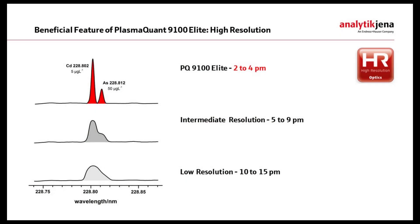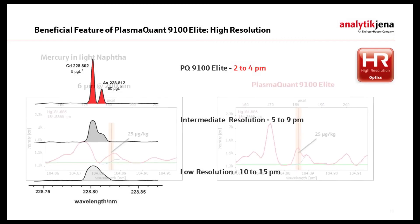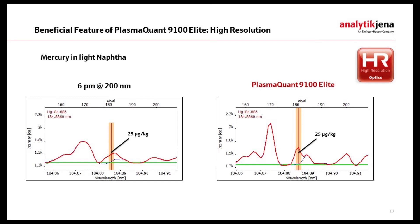The unique resolving power of the high-resolution optics of the PQ9100 guarantees unmatched sensitivity, accuracy, and precision in organic matrices. With a spectral resolution of 2 picometer at 200 nanometer, even severe carbon interferences can be resolved. Select the best emission line for your analytical task. The availability of interference-free emission lines with high sensitivity allows for robust trace element analysis and highest confidence in results.